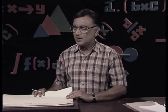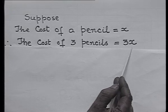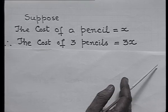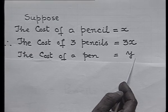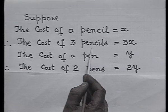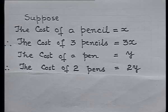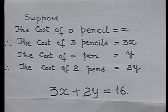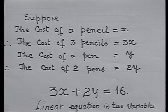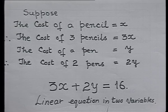I suppose the cost of a pencil to be x, and since we had 3 pencils, the cost of 3 pencils will be 3x. I also assume the cost of a pen to be y, and I had 2 pens, so the cost of 2 pens will be 2y. The cost of 3 pencils and 2 pens together is 16, so we get the equation 3x plus 2y equals 16. Here we have two variables, x and y, and we call this a linear equation in 2 variables.